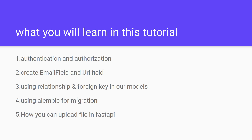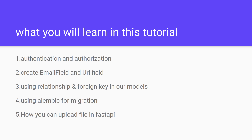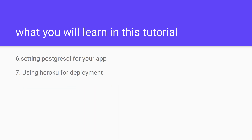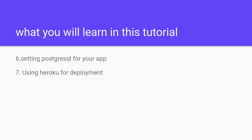Next, you will learn to use Alembic for migration, which we need to keep our database changes consistent. Then you will learn to upload files and images in FastAPI. After that, we set up PostgreSQL for our database in our app.